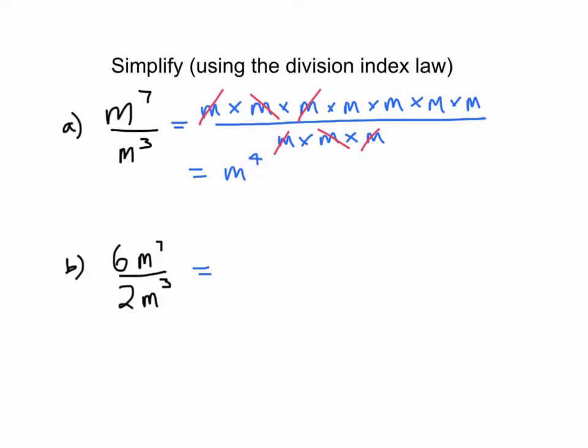Now if you have numbers involved, you'll still have to apply the regular index laws as before. So that's your m's simplifying to that. But with the numbers you've got to remember they still are regular numbers. So you're saying 6 divided by 2 equals your final answer here. So 6 divided by 2 is 3. So your final answer is 3m to the power of 4.